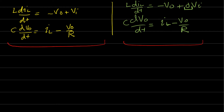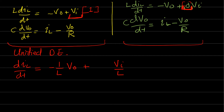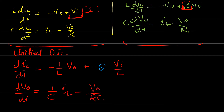Looking at the similarities, these two sets of equations are exactly the same except for the V_in term. Since the switch is 1 when on and 0 when off, the unified differential equation is: di_L/dt = -1/L · V_out + S · V_in/L, and dV_out/dt = 1/C · I_L - V_out/(RC), where S is the switch state (0 or 1).